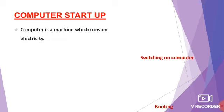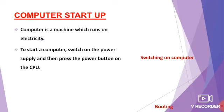A computer is a machine which runs on electricity. Just like a fan rotates with the help of electricity, the computer is a machine which works on electricity. So to start your computer, first you have to switch on the power supply and then press the power button on the CPU. You can see at home while your mother is using the juicer — she fixes the wire in the switch box, then puts on the switch and uses the juicer. Likewise, to start your computer, you have to switch on the power supply and then press the power button on the CPU. There will be a power button on the CPU — you have to press it.